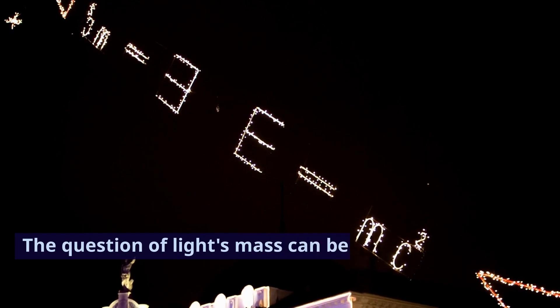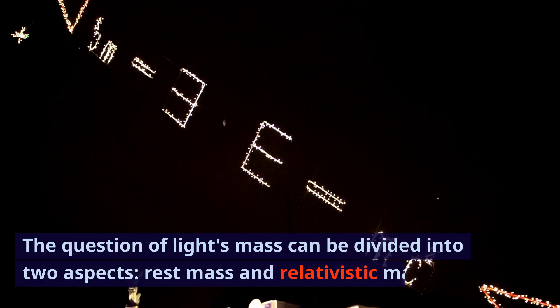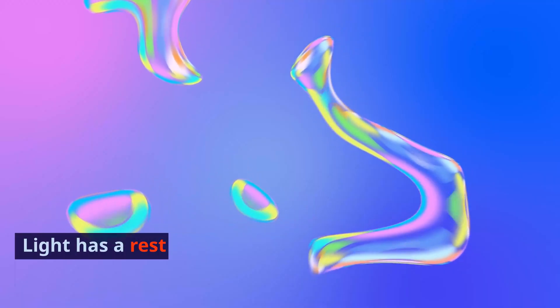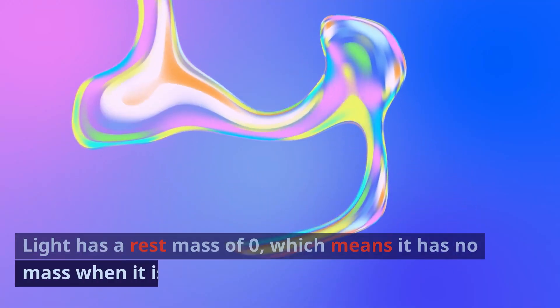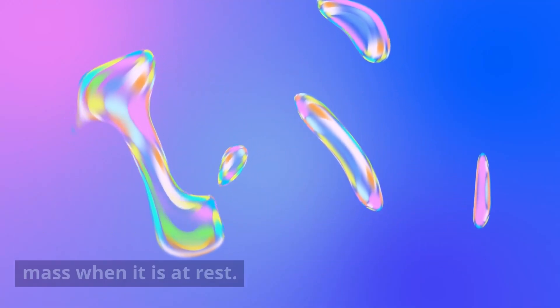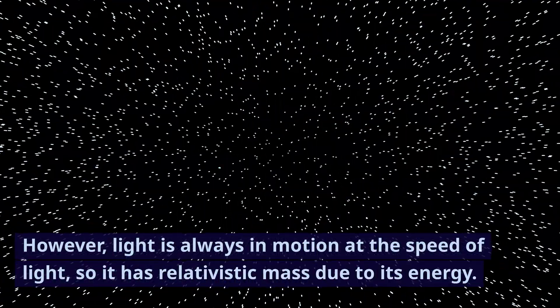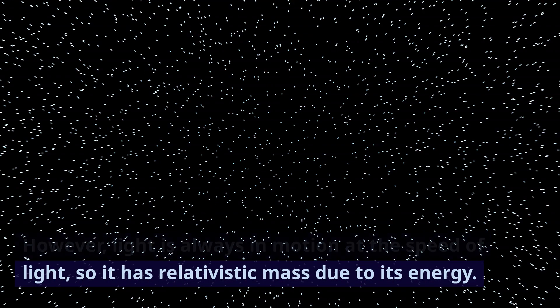The question of light's mass can be divided into two aspects: rest mass and relativistic mass. Light has a rest mass of zero, which means it has no mass when it is at rest. However, light is always in motion at the speed of light, so it has relativistic mass due to its energy.